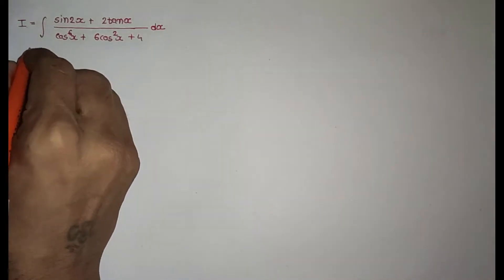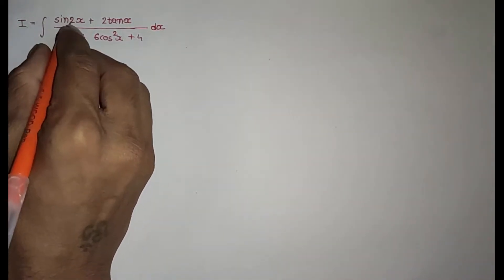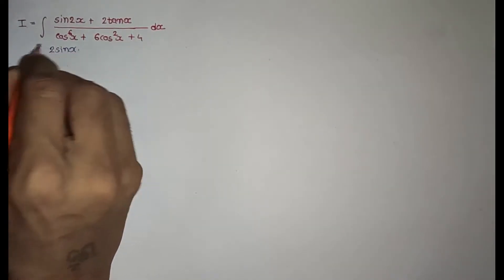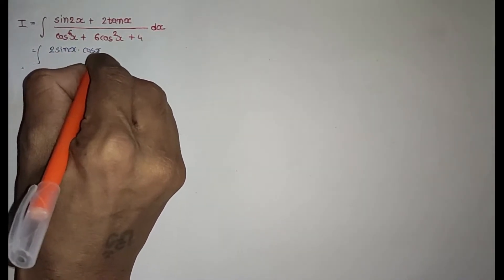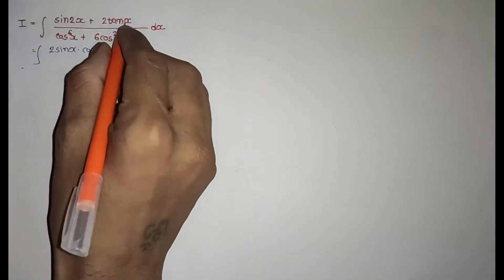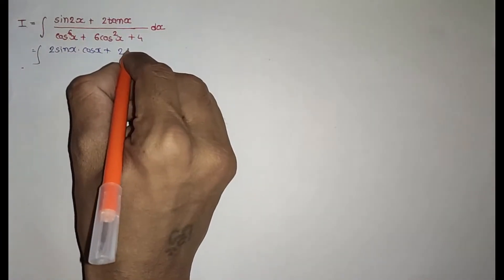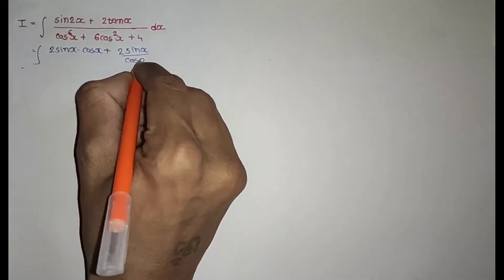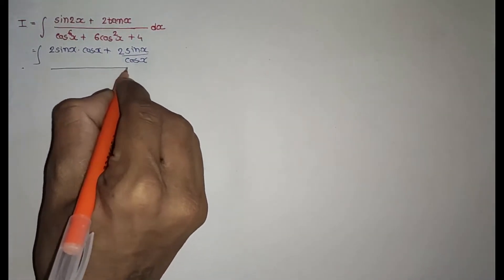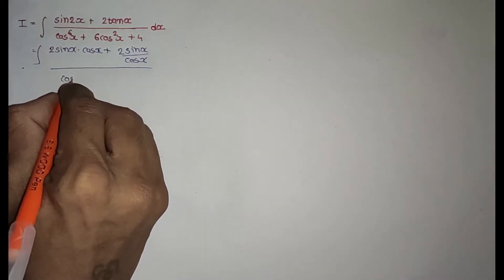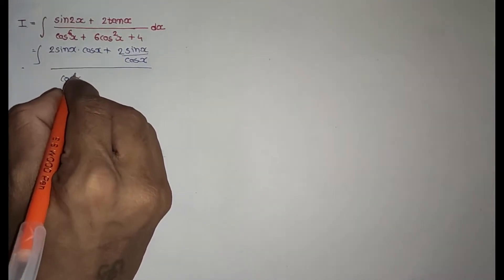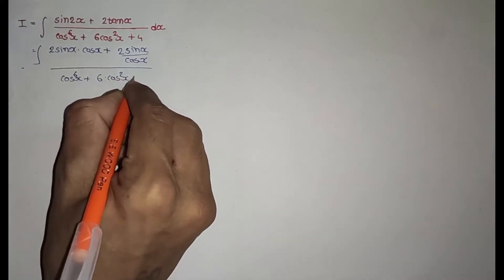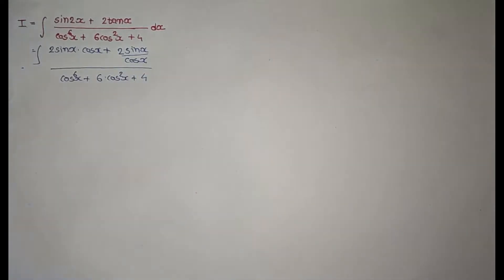Let's play. Now, sin 2x is 2 sin x cos x, plus 2 times tan x which is sin x divided by cos x, all over the denominator cos^6 x + 6 cos²x + 4.